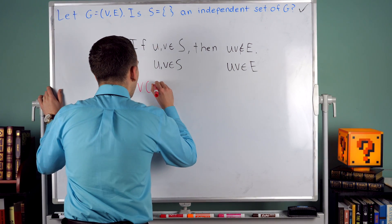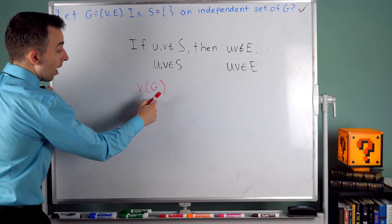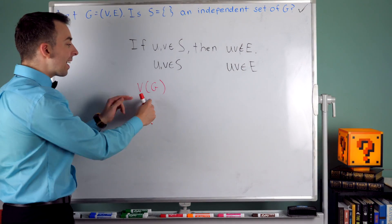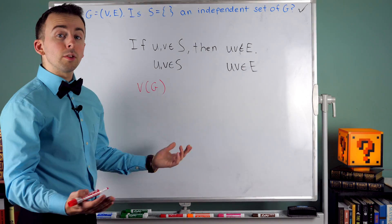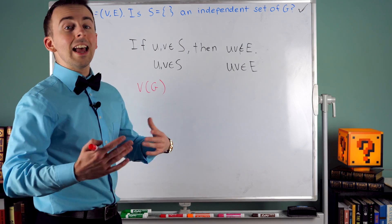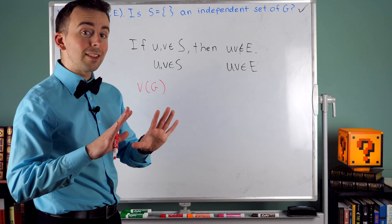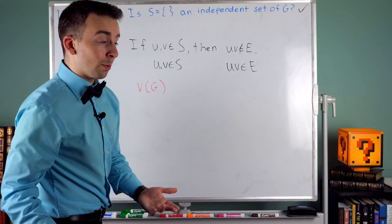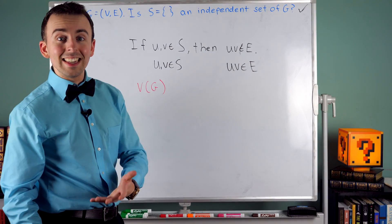So if we take all vertices from a graph, we just take its entire vertex set, that will always be a vertex cover because, of course, every edge is incident with two vertices as long as we're just considering simple graphs. So if we take all the vertices, well, this will definitely cover the entire graph.